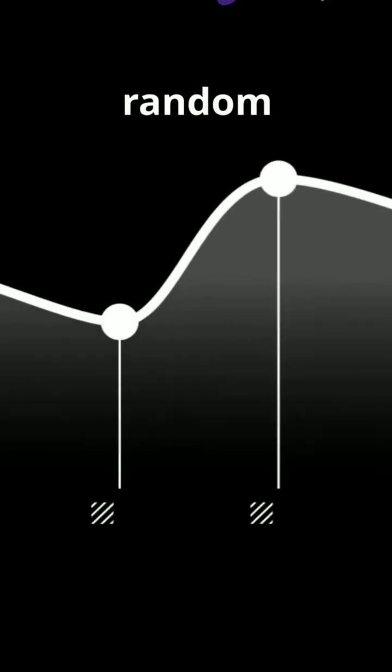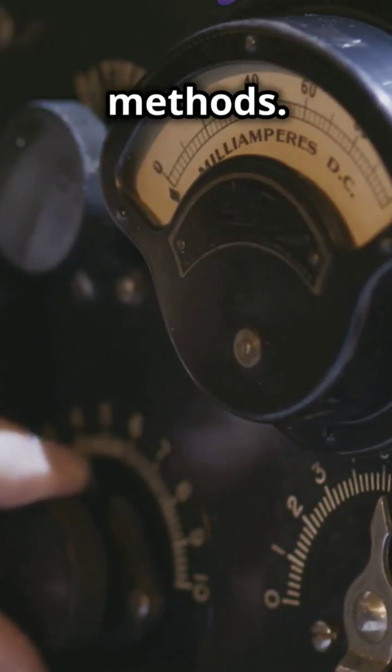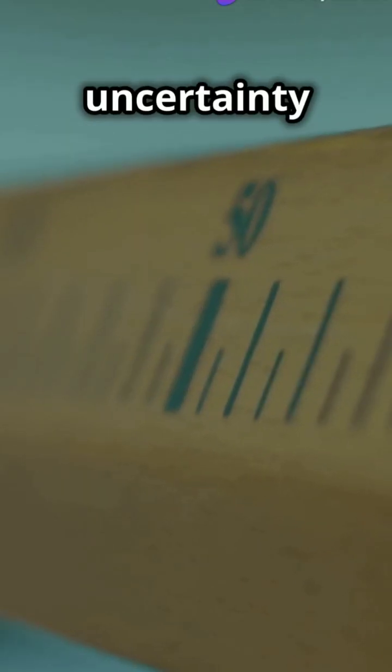First up, random uncertainty: unpredictable fluctuations. Next, systematic uncertainty: consistent errors from equipment or methods. Then, absolute uncertainty: the margin of error in measurements. And finally, percentage uncertainty: uncertainty as a percentage of the measurement.